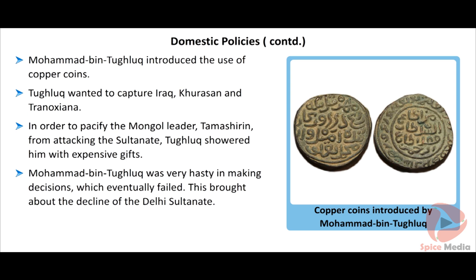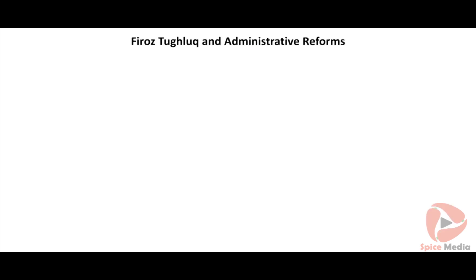Mohammed bin Tughlaq was very hasty in making decisions which eventually failed. This brought about the decline of the Delhi Sultanate. Firoz Tughlaq and administrative reforms.